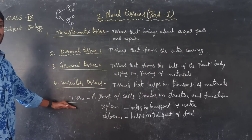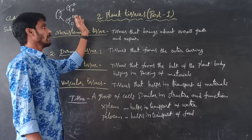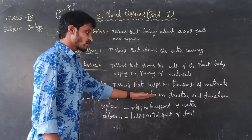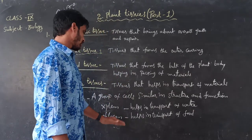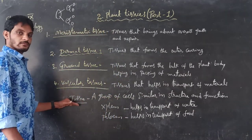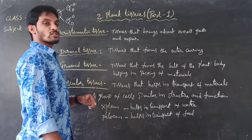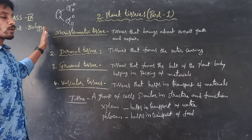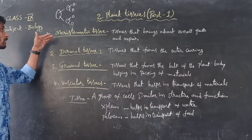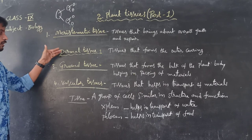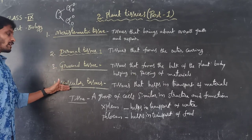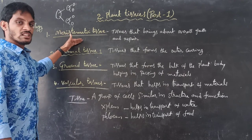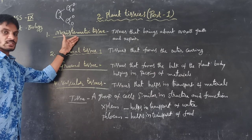Let us recall again. What is meant by tissue? A group of cells similar in structure and function is called a tissue. As in animals, in plants also tissues are present. The four main types of tissues present in plants are: meristematic tissue, dermal tissue, ground tissue, and vascular tissue. Each one has their specific functions. Thank you.